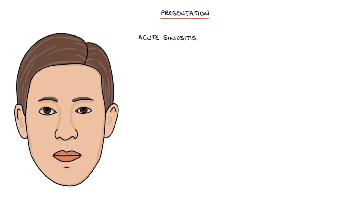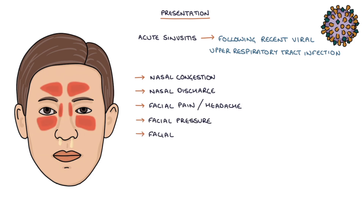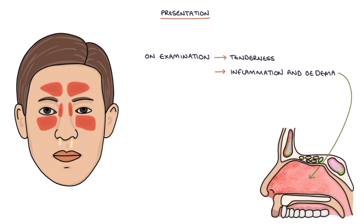The typical presentation of acute sinusitis is following a recent viral upper respiratory tract infection. On examination you may find tenderness to palpation of the affected sinuses, inflammation and oedema of the nasal mucosa when you look up the nose, and discharge from the nose and sinuses. If there's an infection present there may be a fever and other signs of systemic infection, for example tachycardia or a fast heart rate.